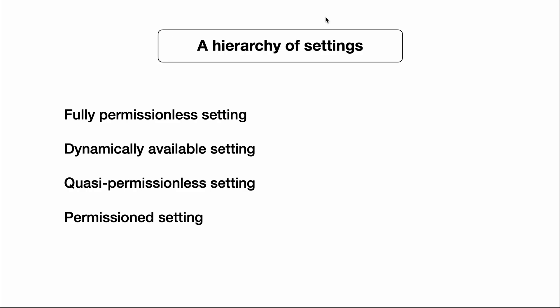One of the things we want to achieve in this tutorial is to precisely define what we mean by the permissionless setting and by permissionless protocols. Something that makes that slightly more difficult is that people often think of some protocols as being in some sense more permissionless than others — for example, proof-of-work protocols as being more permissionless than proof-of-stake protocols. What we'll do is define a hierarchy of four settings, from most permissionless down to least permissionless.